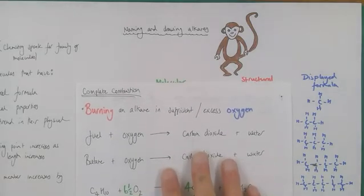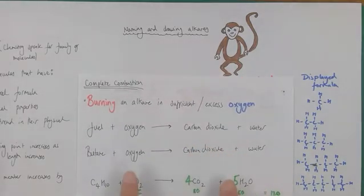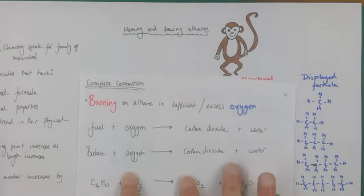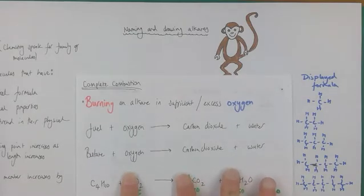You might be asked to generate balanced equations for that. The first thing is you'd want to write out an equation without the numbers. So just a standard symbol equation without balancing for combustion is fuel, butane, plus oxygen O2, forms carbon dioxide and water. Then you think about doing some balancing.